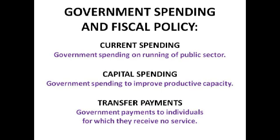Now we're going to look at three different types of government spending within fiscal policy: current spending, capital spending, and transfer payments. Current spending is government spending on the running of the public sector — for example, raw materials or the wages of public sector workers. With capital spending we're trying to improve the factors of production and productive capacity — for example, education and training, hospitals, and infrastructure such as roads.